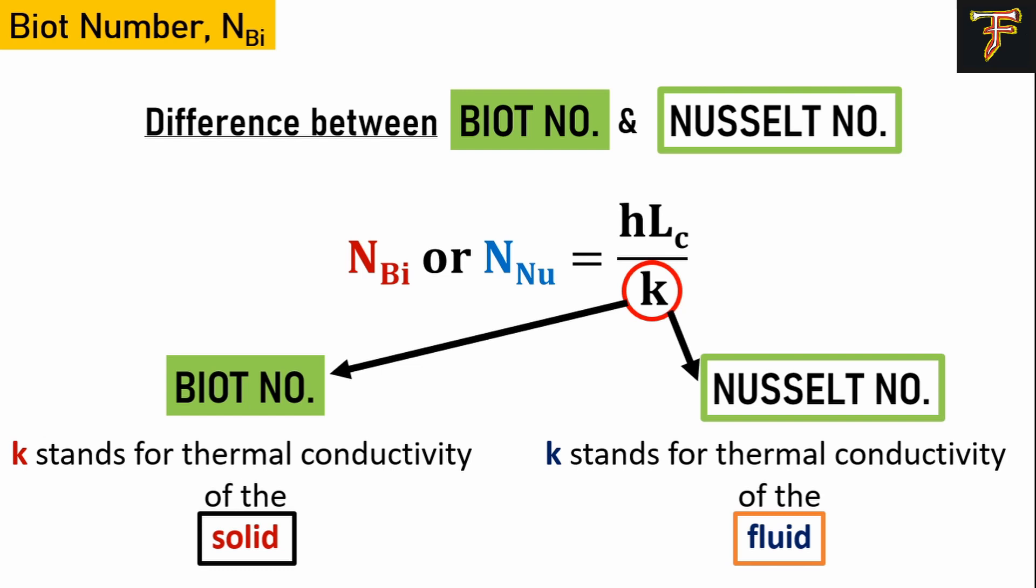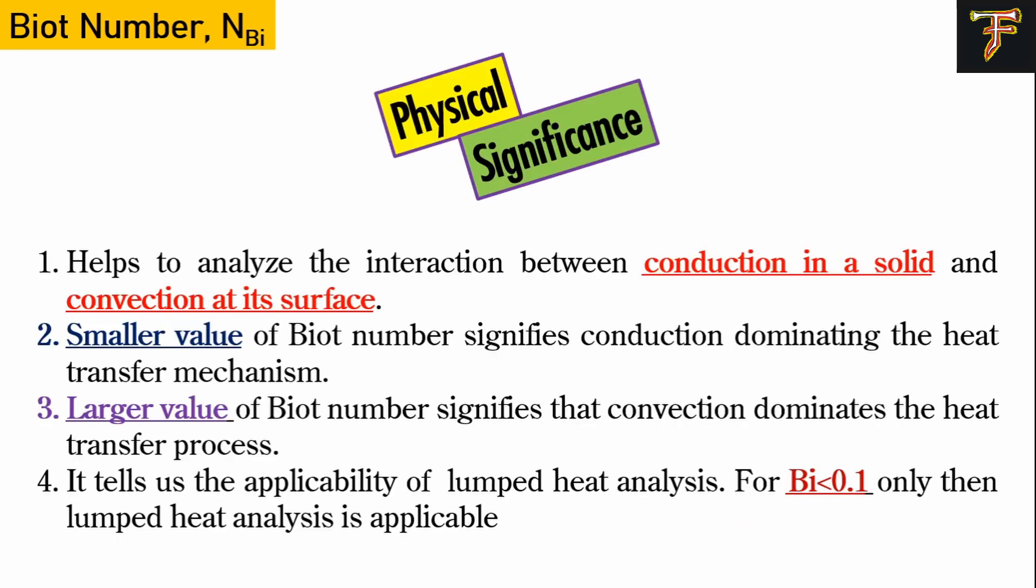Finally, let's go into the physical significance of this number. As was obvious from the definition, the Biot number helps us to understand the interaction between conduction in a solid and convection at its surface. Smaller values of Biot number signify that conduction is dominating the heat transfer process, and larger values signify that convection is dominating the process. Also, if the Biot number is less than 0.1, it is used in lumped system analysis.